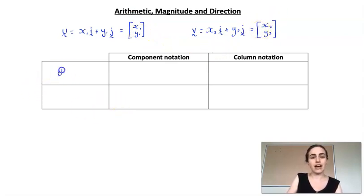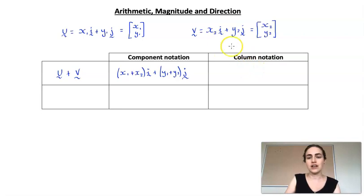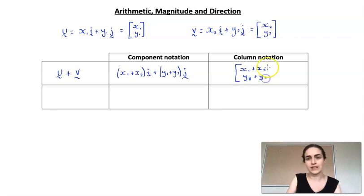Looking at arithmetic: if I add those two vectors together, so if I do u plus v, the way it works in component notation is we add the coefficients of i. So we get x1 plus x2 i, plus y1 plus y2 j. In column notation, I add my two x's together — x1 plus x2 on top — and then add my y's together — y1 plus y2 on the bottom.